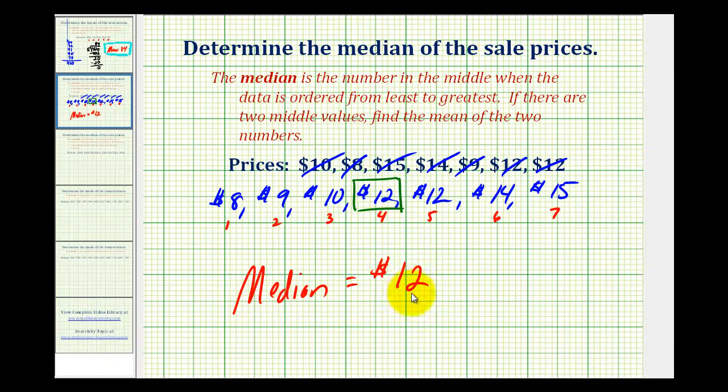So at most, half of the prices are above twelve dollars and at most half of the prices are below twelve dollars. Knowing the value that is in the middle of a given data set gives us additional information than just determining the mean, because the mean can be skewed by having one extremely low or extremely high value, but the median will always be right in the middle.